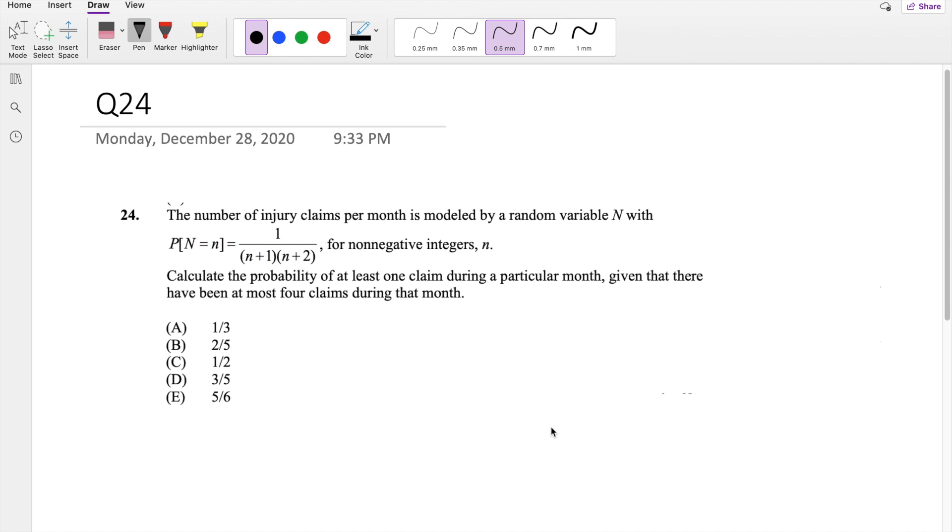Assuming you already attempted it, let's just dive right in. So the question asks, calculate the probability that n is at least one claim, so greater than one claim, given that at most there has been four claims.